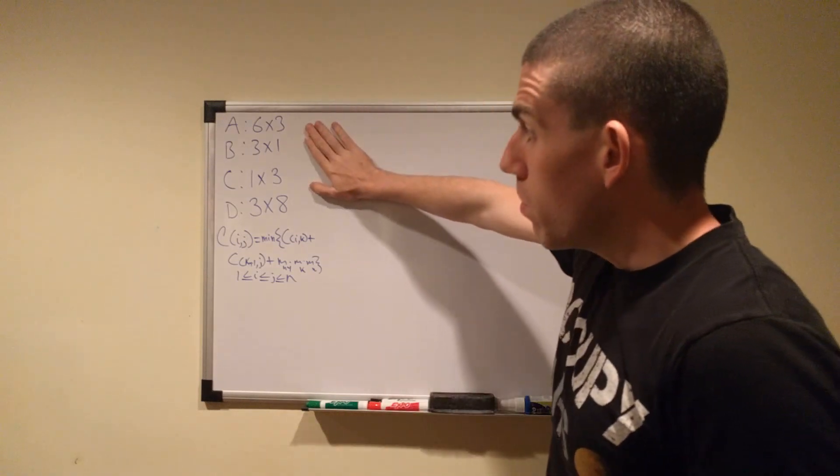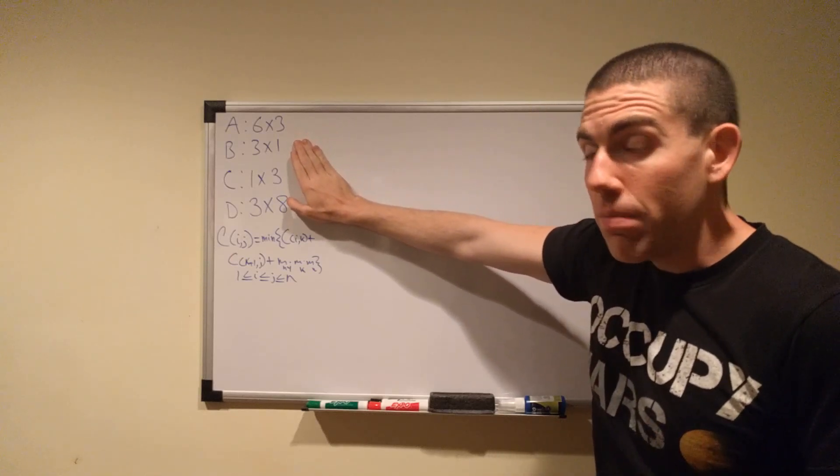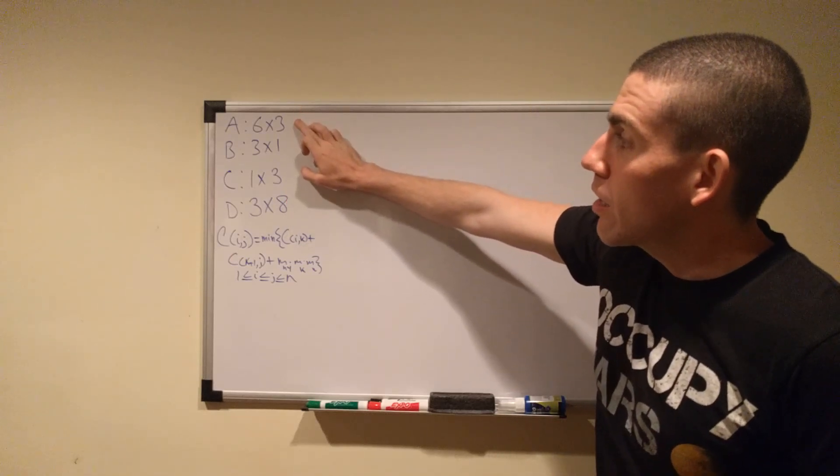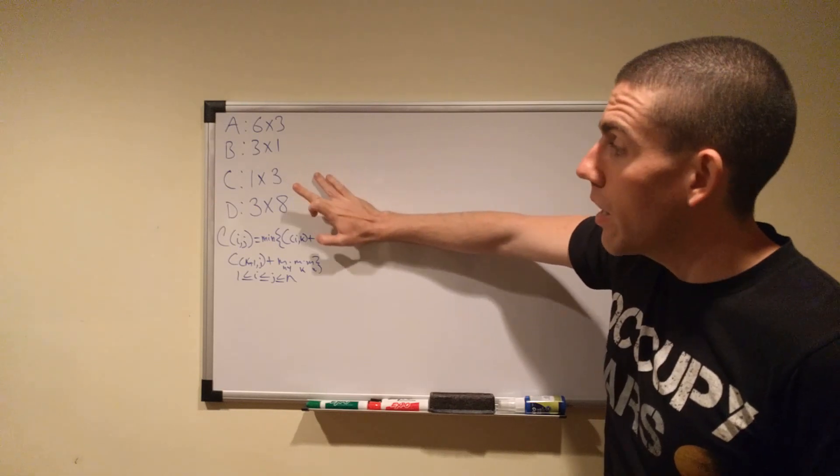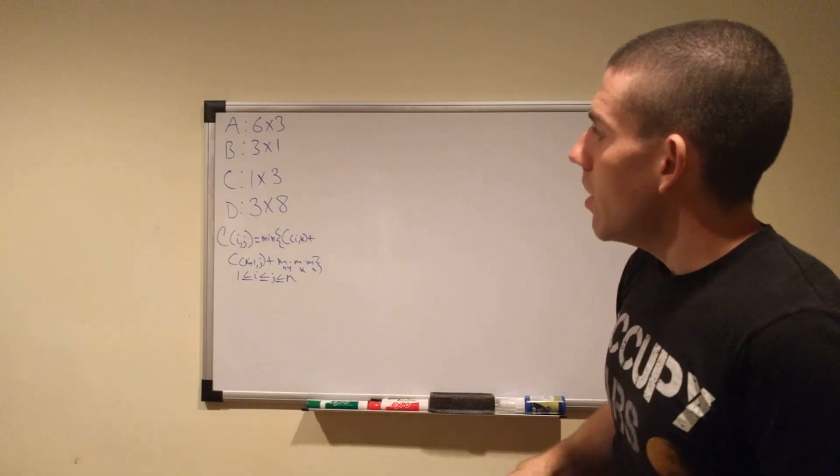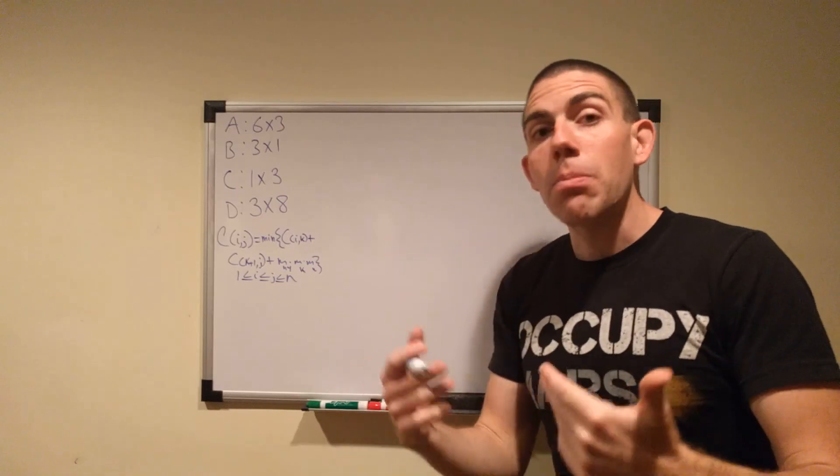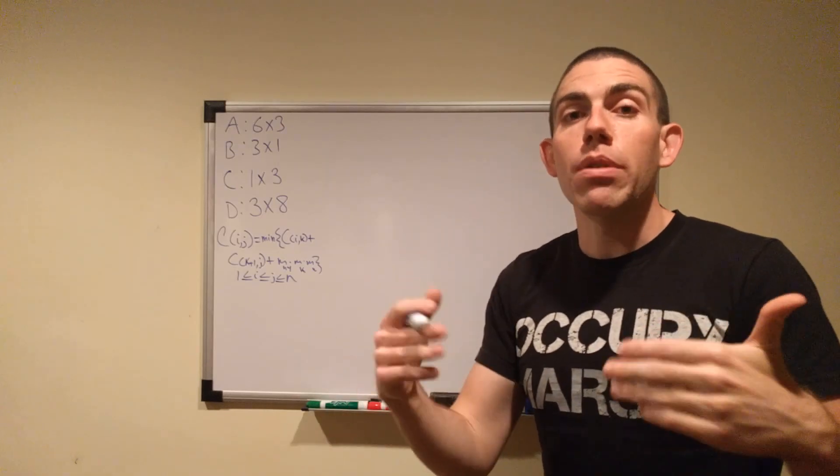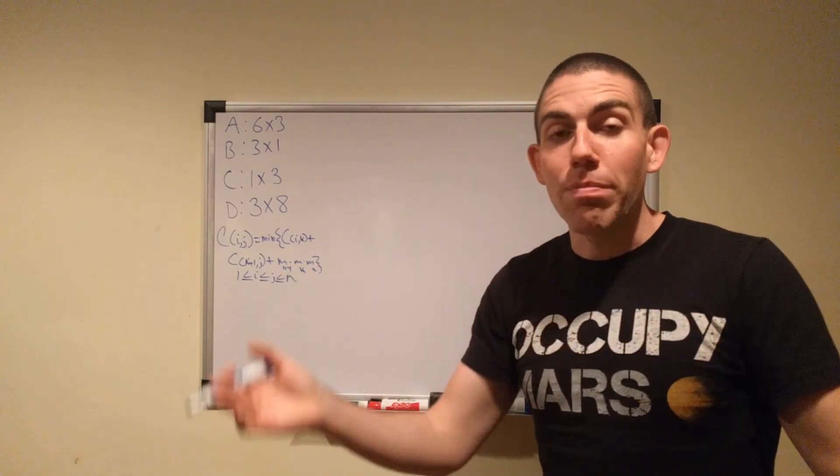We're going to start with the matrices that I defined in the beginning of the last video. So we have A at 6 by 3, B at 3 by 1, C at 1 by 3, and D at 3 by 8. And that is all that we need in order to find what we're looking for, which is the optimal ordering of parentheses to produce the fewest multiplications required to obtain the product of the chain of matrices.